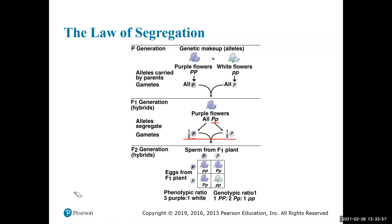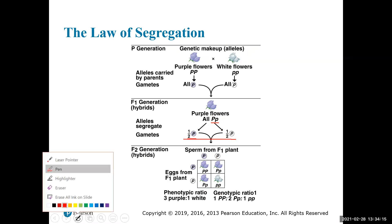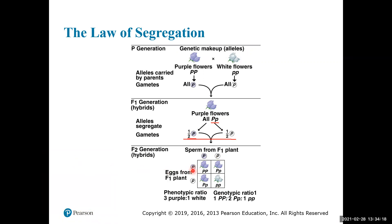Now if we build the Punnett square for the F2 generation, each parent gives either uppercase P or lowercase p. The resulting combinations are: uppercase P / uppercase P (homozygous dominant), uppercase P / lowercase p (heterozygous) — appearing twice — and lowercase p / lowercase p (homozygous recessive). So from this cross, three out of four offspring have the dominant phenotype (purple flowers) and one out of four has the recessive phenotype (white flowers).